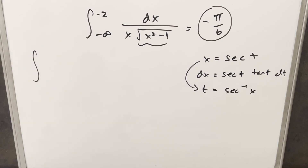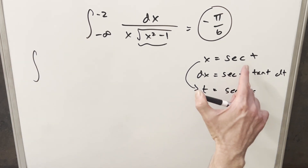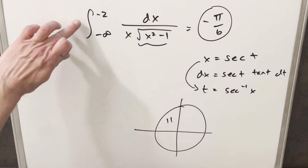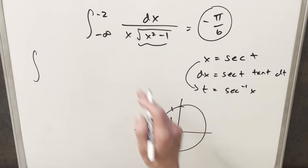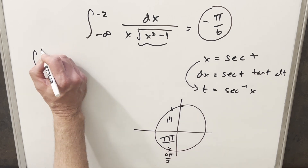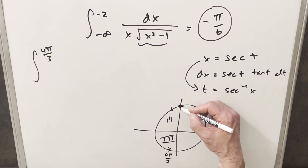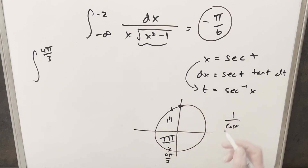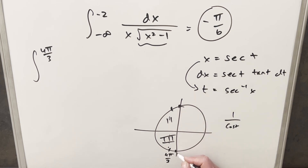At the beginning of the video we found the values for inverse secant at minus two and minus infinity defined in the second quadrant. Now I'm going to define this in the third quadrant instead. For inverse secant at minus two, instead of two pi over three we take the corresponding value four pi over three as our upper bound. For minus infinity, instead of the value near pi over two — where cosine is very small so secant is very large negative — we take the value near three pi over two.